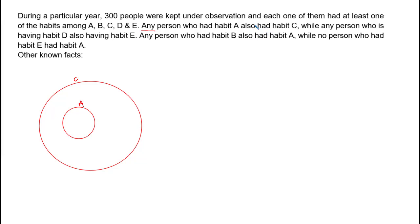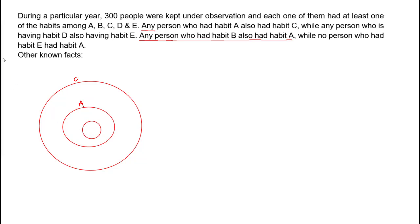Any person who had habit B also had habit A — so within the circle of A, there is another circle representing the number of people having habit B. Also, no person who had habit E had habit A, meaning there is no intersection between habit E and habit A. So the circle of habit E is placed separately.